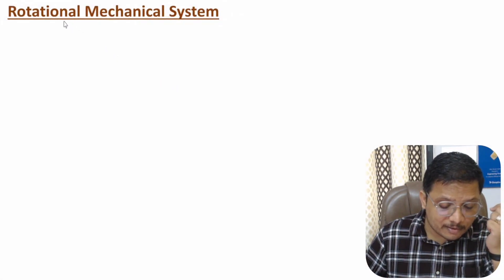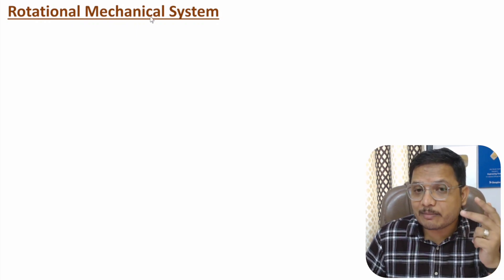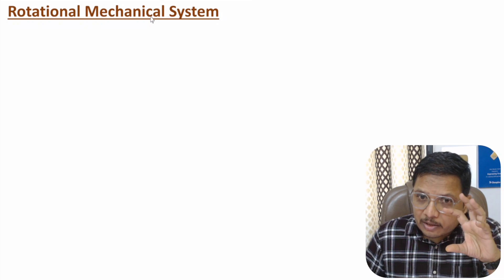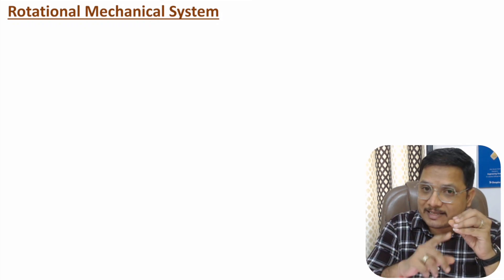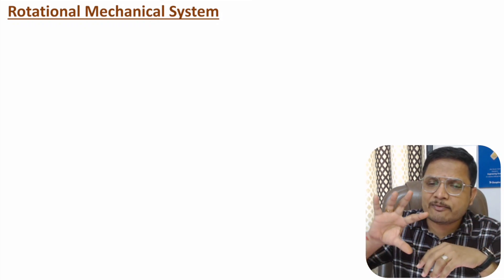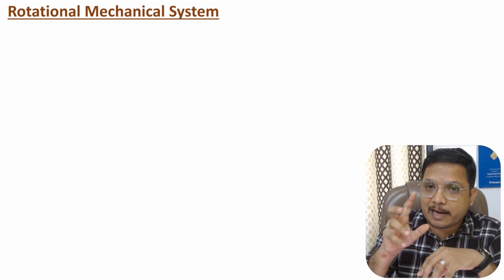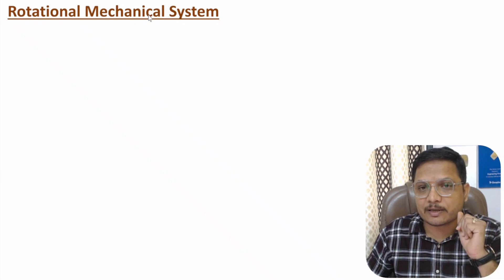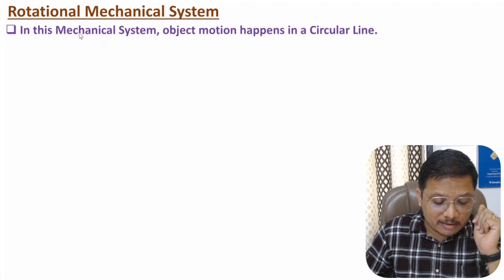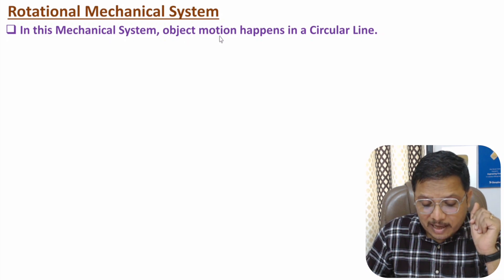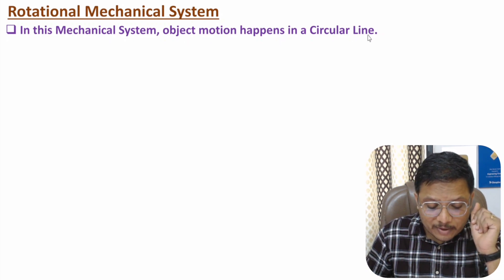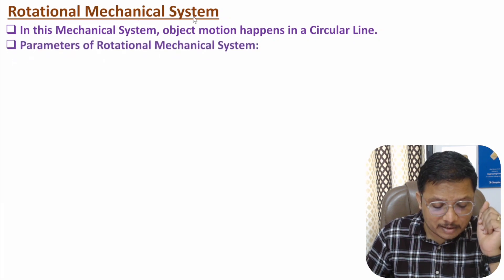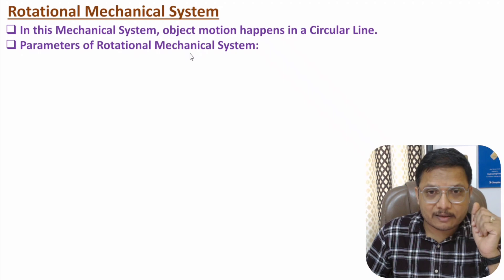Now I'll discuss the second category: rotational mechanical system. In the rotational mechanical system, motion of the object happens in a circular trajectory. If a body is revolving, the analysis should be done as per the rotational mechanical system. Now let me discuss the parameters of rotational mechanical system.